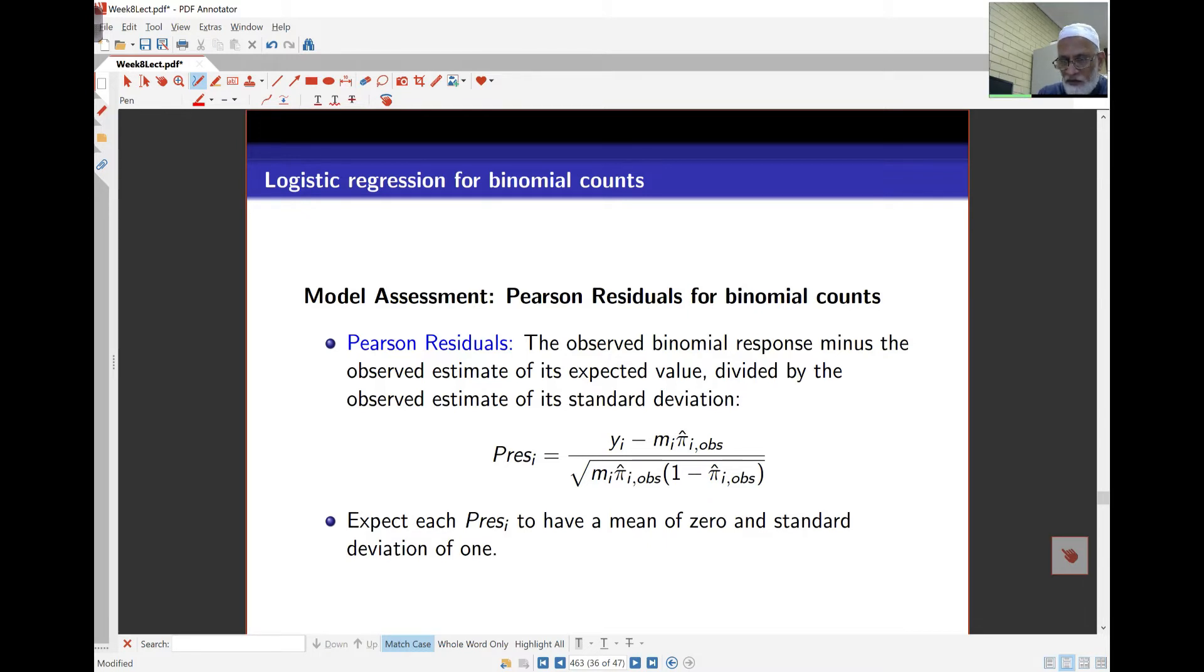m_i pi_i observed here is the expected number of successes. And of course, at the bottom here, we're going to have the standard deviation, which is the square root of variance. If I have binomial data, the m_i becomes 1. Nothing else changes here. So the Pearson residuals will have mean 0 and standard deviation of 1.